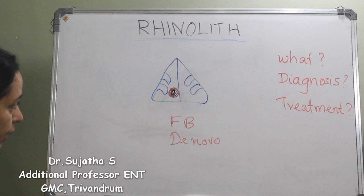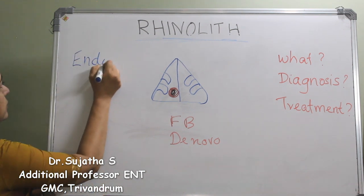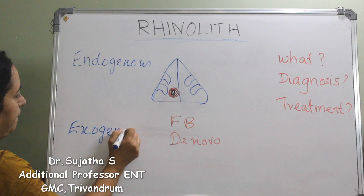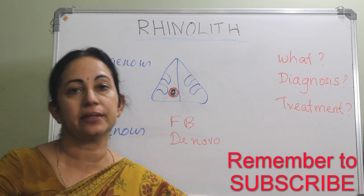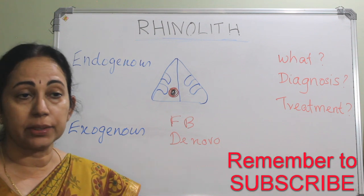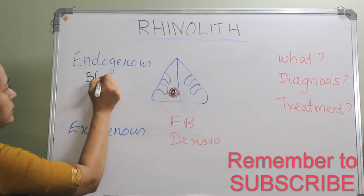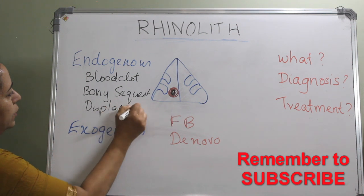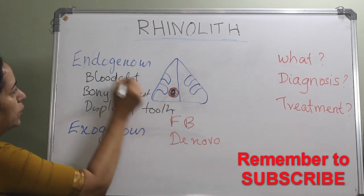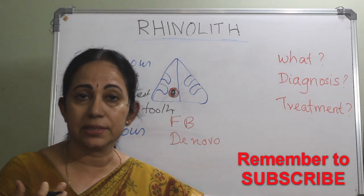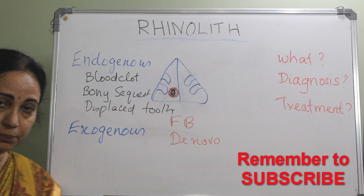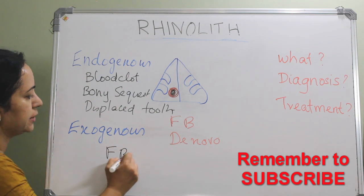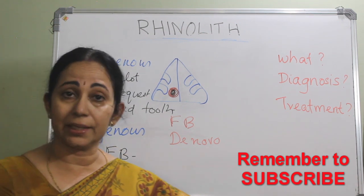There are two types of rhinolith based on the nidus: endogenous and exogenous. Endogenous means it forms around something already inside the nose — such as a blood clot or a displaced tooth. Exogenous means it forms around something inserted into the nose from outside, like a foreign body such as a peanut or a button.